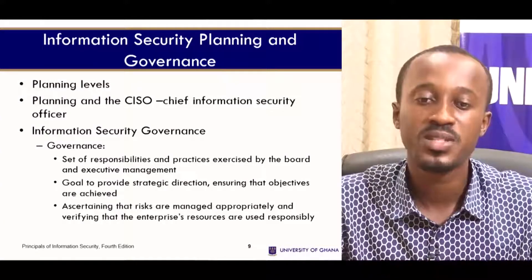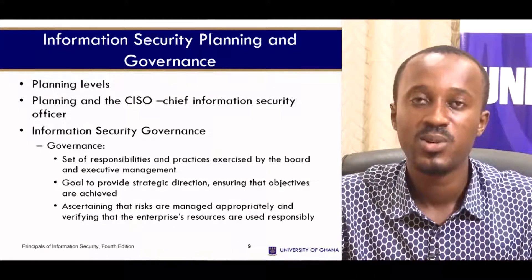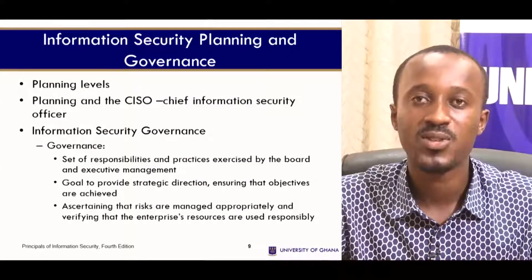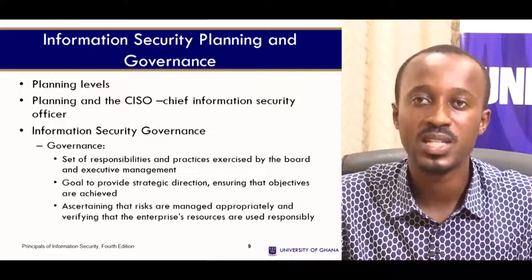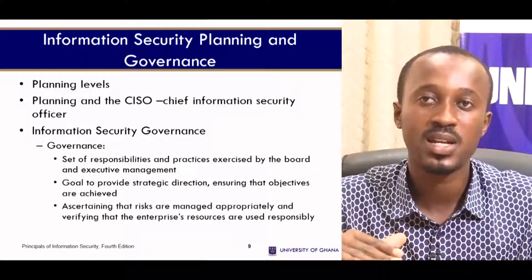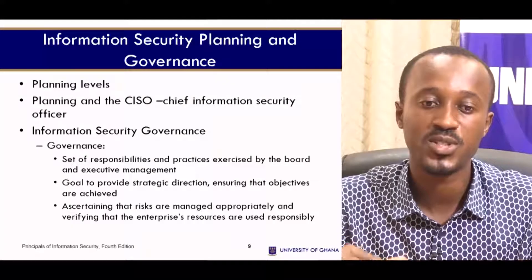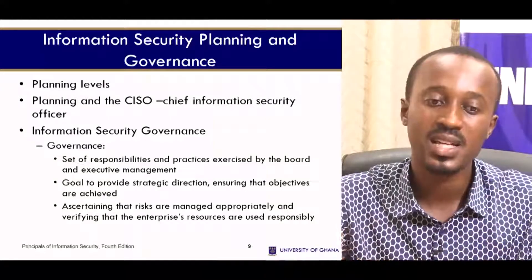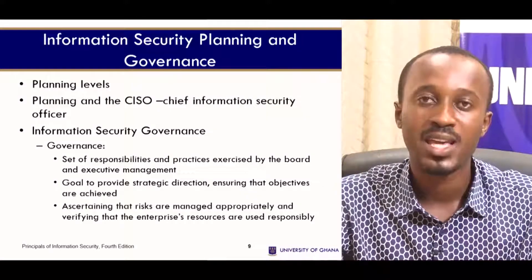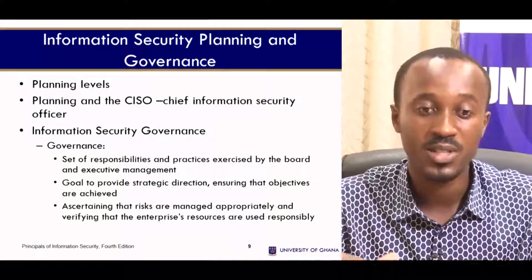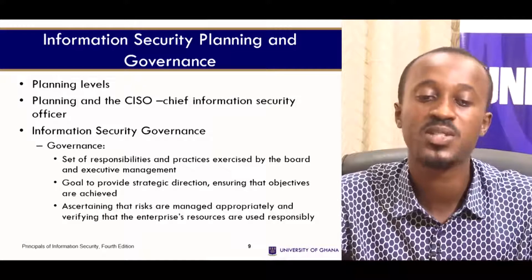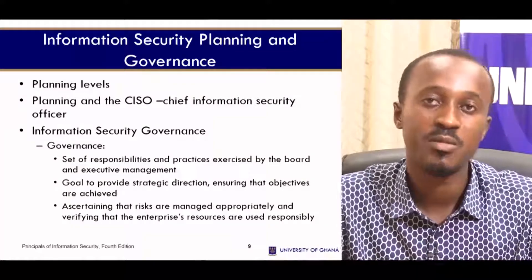With information security planning and governance, we have planning levels. Once a set of activities or policies are put in place, we can identify that on every level there is a plan regarding how information is going to be treated. The chief information security officer — the CISO — is the one to help roll out the plan.